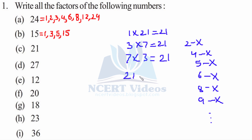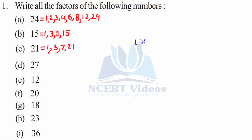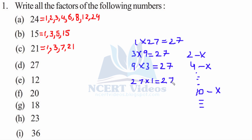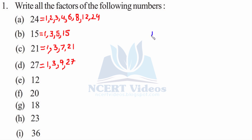Likewise, we have 21 times 1 is 21. For 27: 1 is again a factor. 2 is not. 3 nines are 27. 4 is not. 9 into 3 is 27. 10 is not a factor. 27 into 1 gives you 27. So these are the factors: 1, 3, 9, and 27.